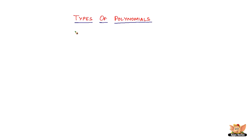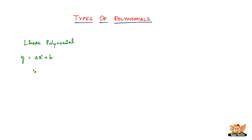In this video let us look into a new topic of polynomials. Specifically we're going to look into the different types of polynomials. The first one is a linear polynomial. A linear polynomial is an equation like ax plus b. It is called a linear polynomial because of its exponent — the maximum exponent here is one. There is only one variable and it has an exponent of just one.